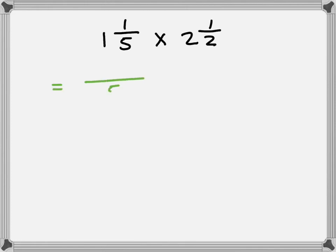The first one is going to be 5 plus 1 is 6, 6 over 5. The next one's going to be 2 times 2 is 4 plus 1 is 5.